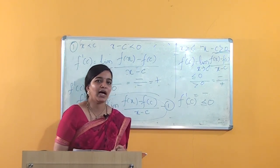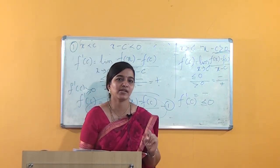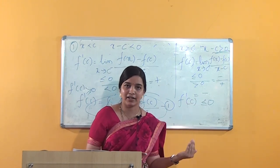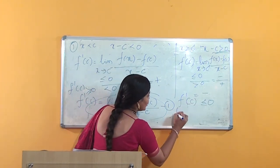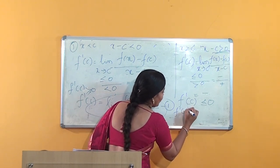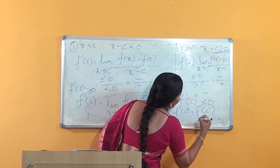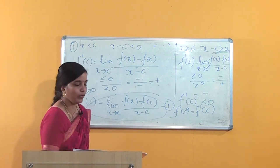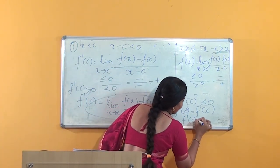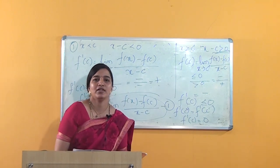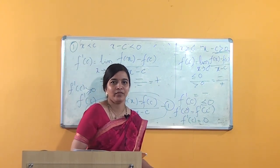We know that f' exists. When the derivative exists, the left-hand derivative and the right-hand derivative must be equal. From Case 1, f'(c) ≥ 0, and from Case 2, f'(c) ≤ 0. This is possible only when f'(c) = 0. Hence the theorem is proved. Thank you, students.